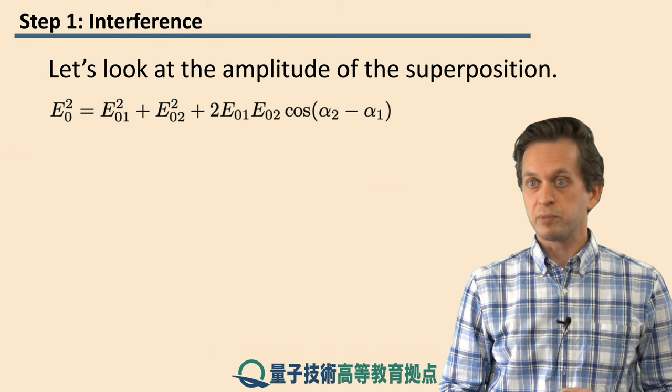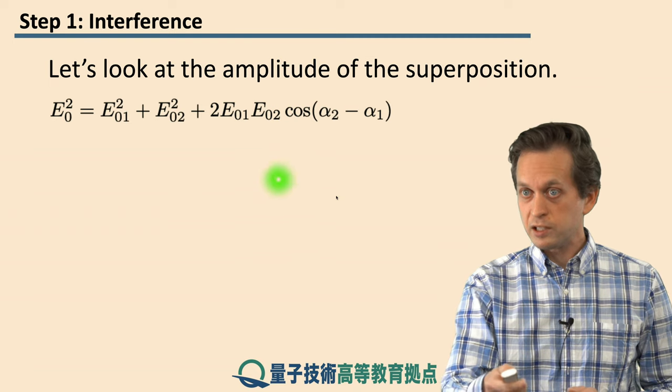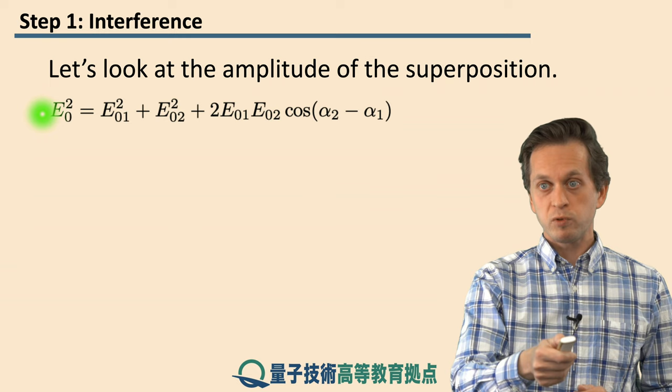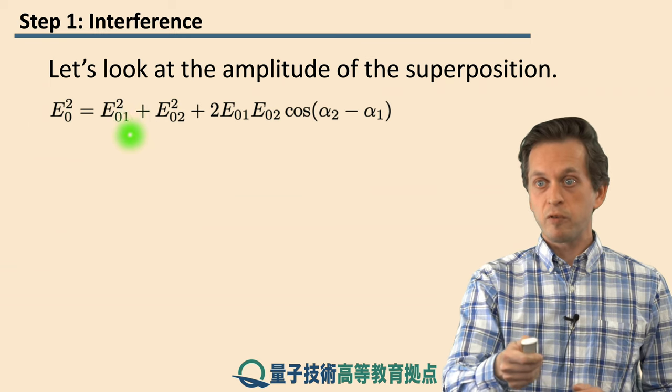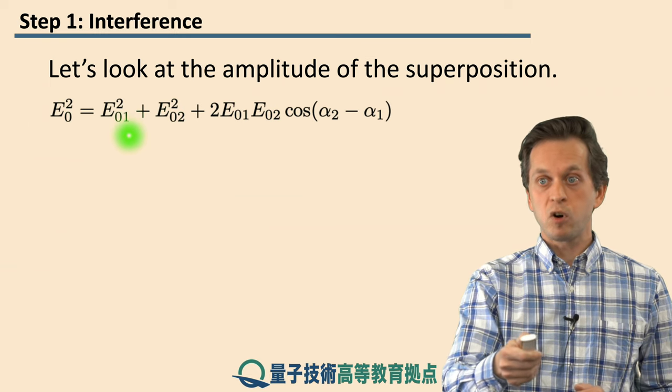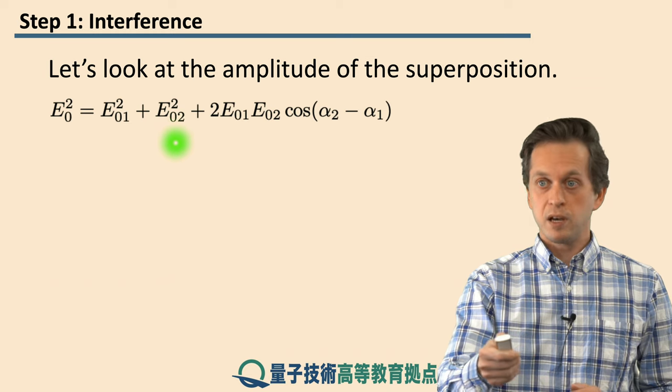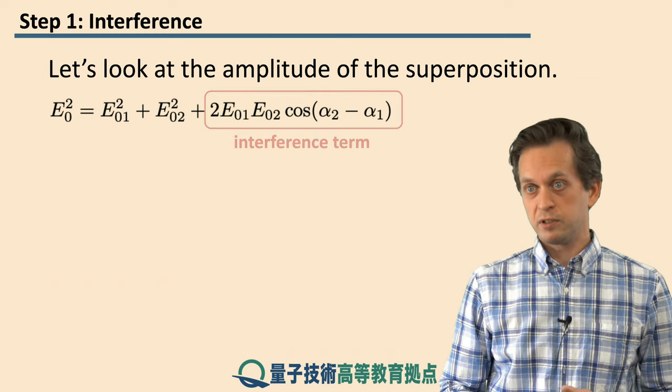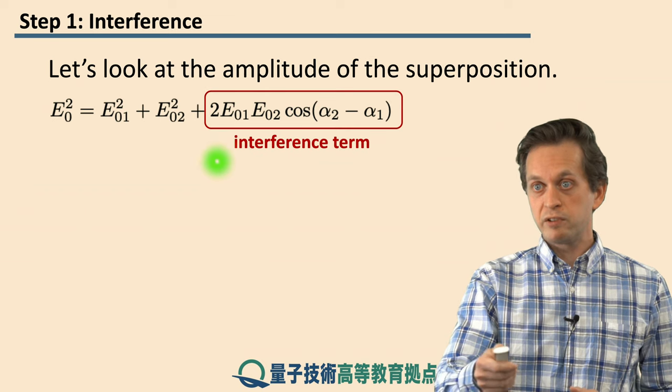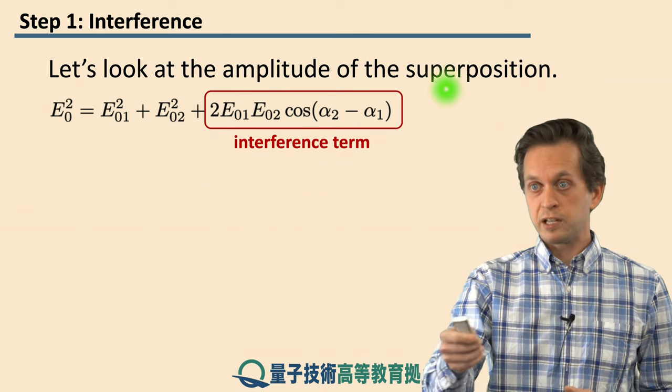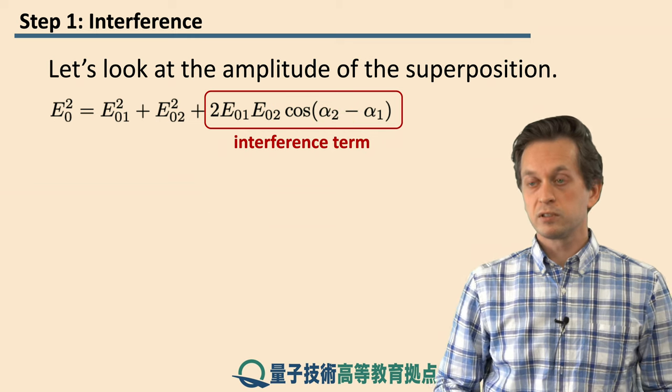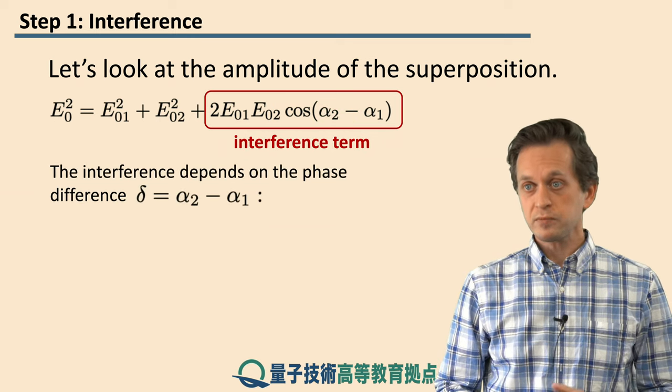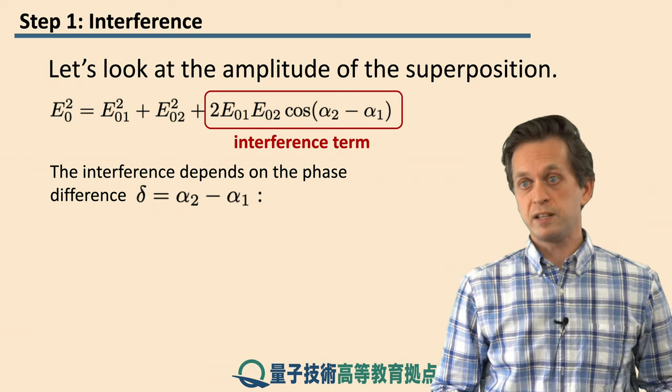So let's look at some examples. But before that, actually, let's look at the amplitude of this superposition. So we've got the amplitude squared is equal to the sum of the squares of the component amplitudes, which makes sense. But then there is this extra term, and this extra term is very important. It's called the interference term. You can see that it actually oscillates as a result of the difference between α₂ and α₁. And this difference is called the phase difference.